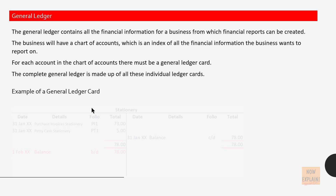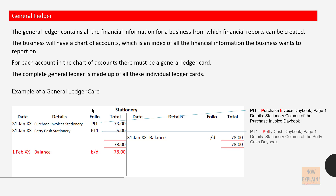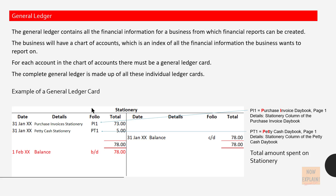Example of a general ledger card: this is a stationery ledger card where the information came from the purchase invoice daybook and the petty cash daybook, and will also show the total amount spent on stationery.